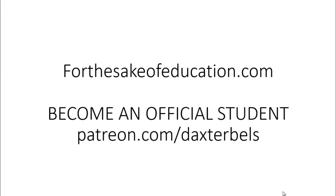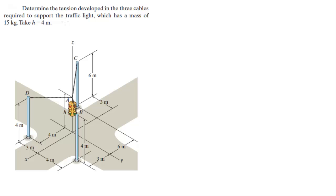For more videos visit ForTheSakeOfEducation.com or support me at Patreon.com/DaxterBells. Alright guys, let's find the tension developing in the three cables required to support the streetlight. The streetlight has a mass of 15 kilograms and the height at which the streetlight sits, in other words the height of point A, is 4 meters. So the first thing we have to do is find all the unit vectors.